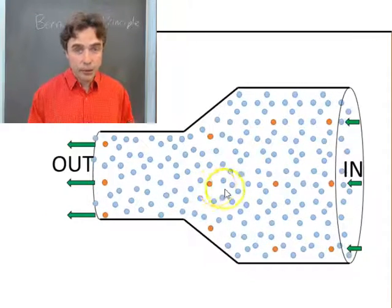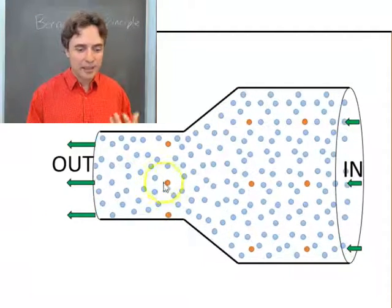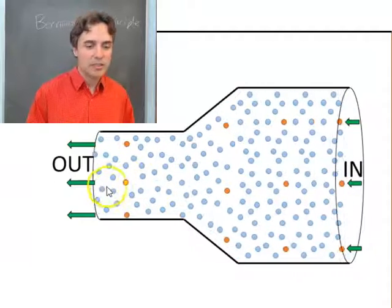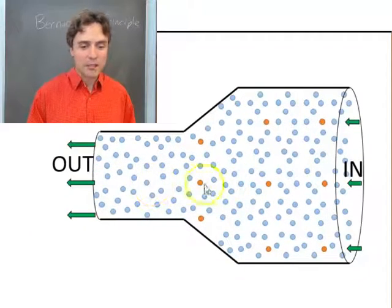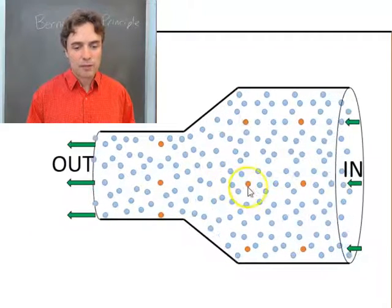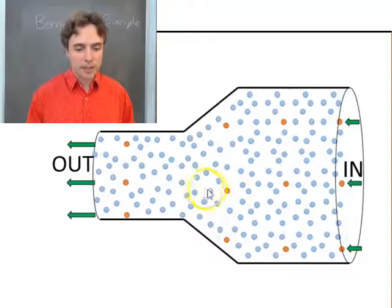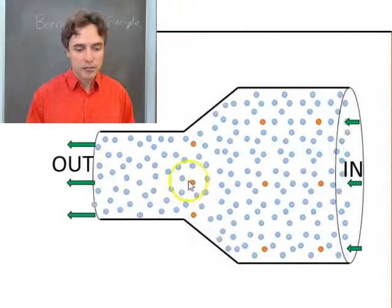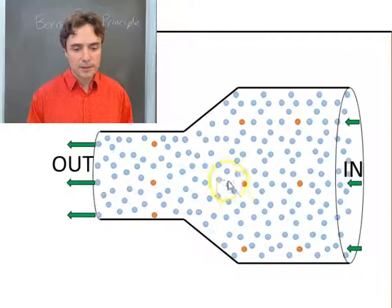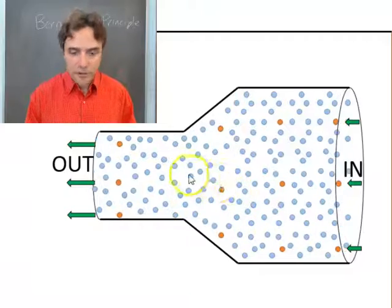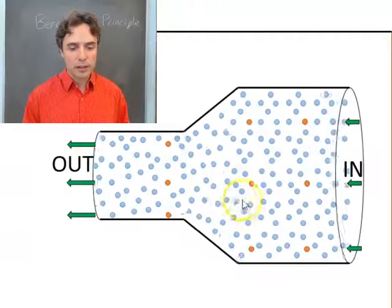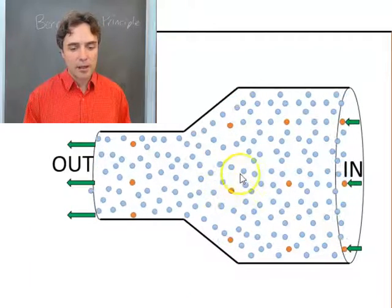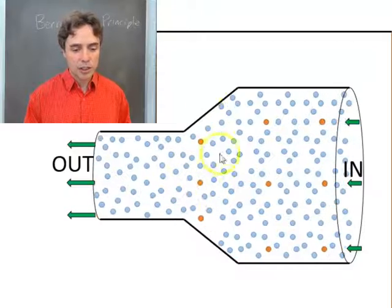But the question is, and Bernoulli asked this question, how exactly do these particles speed up? And why would they speed up? And what is the force which is causing them to accelerate? We need a force in this region right here pushing towards the left. Well the answer is, it turns out to be a pressure force. All of these particles are jiggling around and bumping into each other and pushing each other.